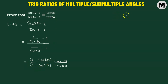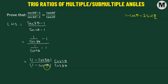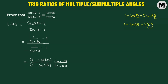We know that 1 minus cosine θ equals 2 times sine squared(θ/2). In our case, we have 1 minus cosine 8θ in the numerator and 1 minus cosine 4θ in the denominator. To convert θ into 8θ, we multiply θ by 8, which gives 2 times sine squared(8θ/2) = 2 sine squared 4θ. So 1 minus cosine 8θ can be replaced with 2 sine squared 4θ.